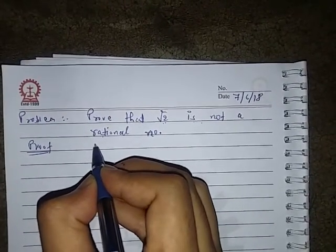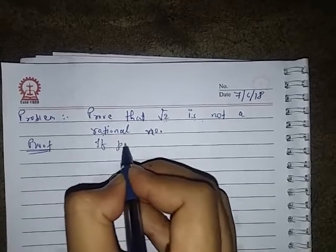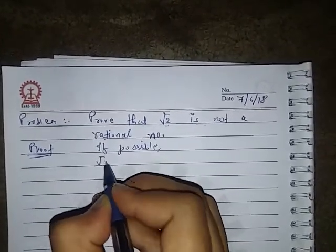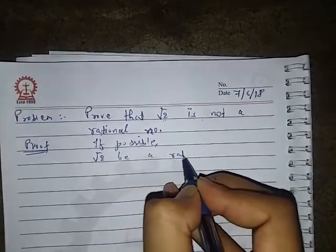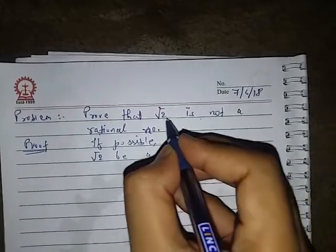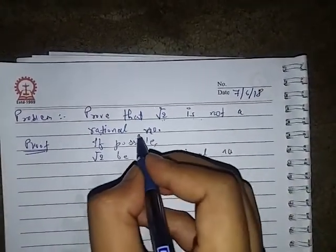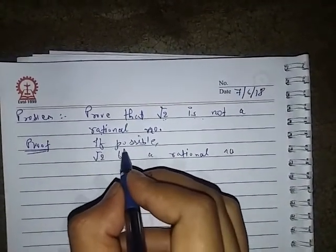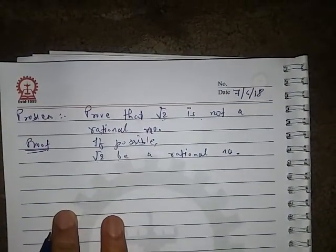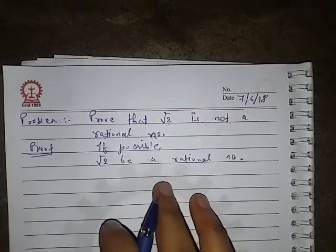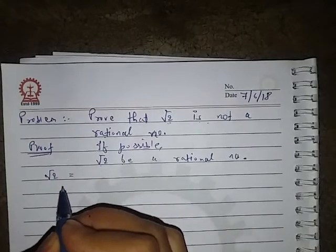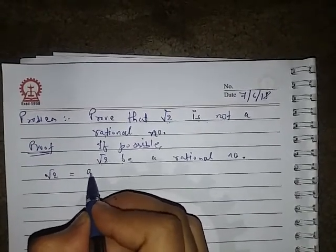First, we assume if possible, root 2 is a rational number. We have to prove root 2 is not a rational number, but in our proof we assume that root 2 is a rational number. If root 2 is a rational number, then we can write root 2 as a upon b.